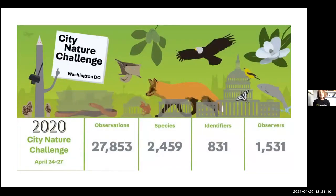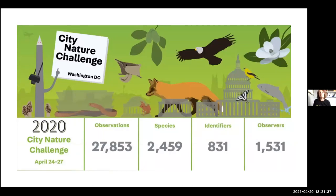Here's how the D.C. area did last year in 2020. We really excel in number of participants — over 1,500 people participated, putting us in fourth place internationally, which is impressive. In terms of species and biodiversity, we can't compete with cities in Ecuador and South America in the Amazon, but in terms of participants, D.C. always does really well. This year I think we're going to do even better — we need your help to find even more species.